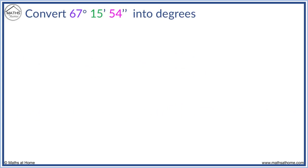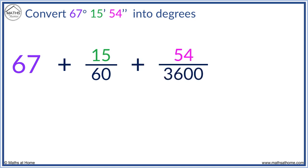Convert 67 degrees, 15 minutes, 54 seconds, to degrees. We have 67 degrees. We add 15 over 60. We add 54 over 3,600.